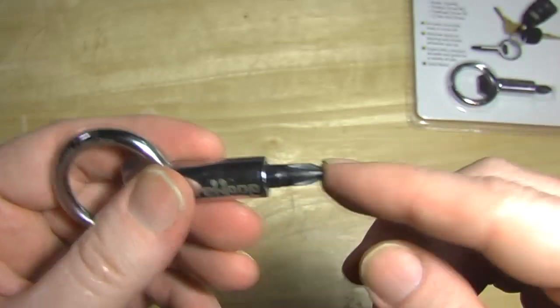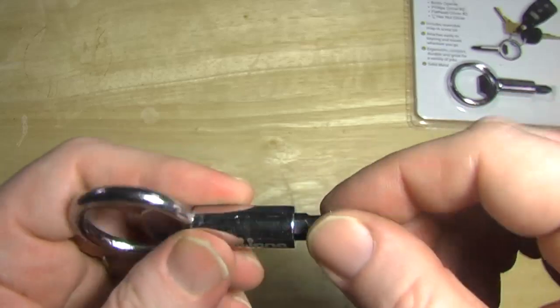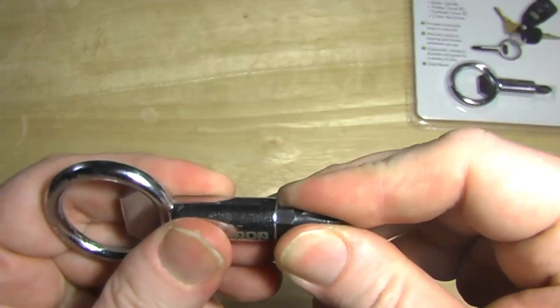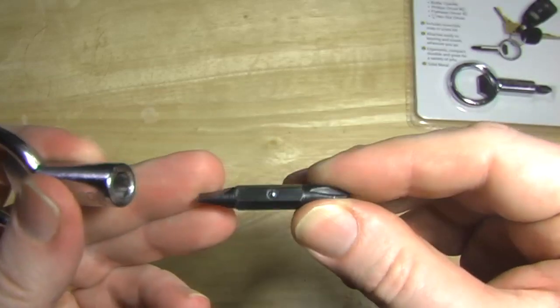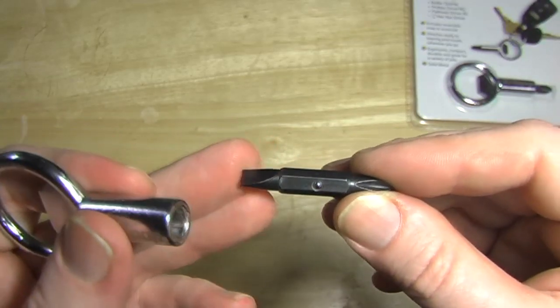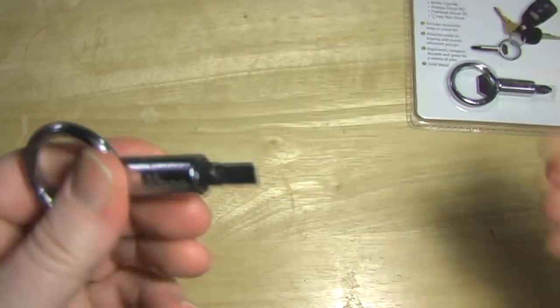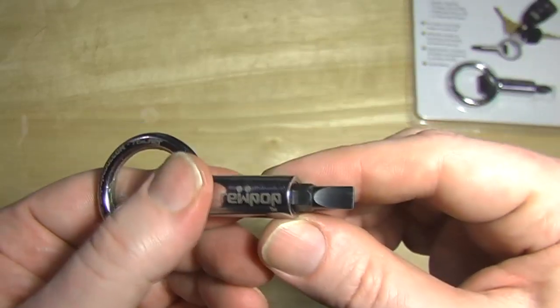And the screwdriver side of it, there's a Phillips number 2 screwdriver and it's held in by a ball bearing so it's quite snug in there. It doesn't fall out. Turn it around and you've got a number 2 flathead screwdriver.